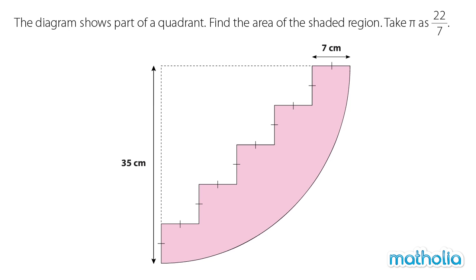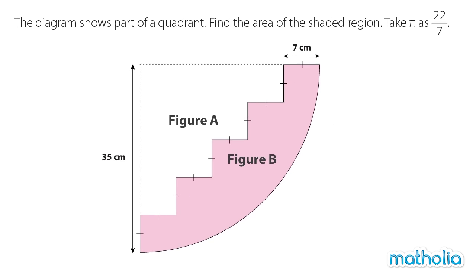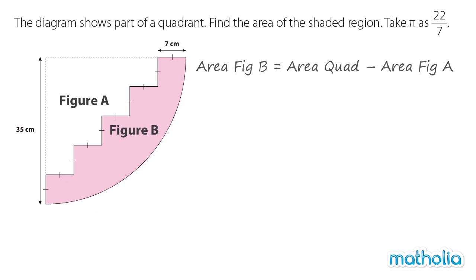Let's label the two figures that make up the quadrant as figure A and figure B. We need to find the area of the shaded region which is figure B. The area of figure B can be found by subtracting the area of figure A from the area of the quadrant.